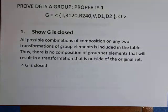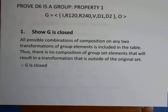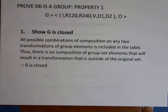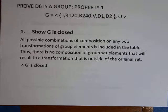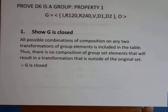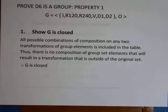First, I show closure. All possible combinations of compositions of any two group element transformations are included in the table. Thus there is no composition of group set elements that results in a transformation outside our original set, and therefore this group is closed.